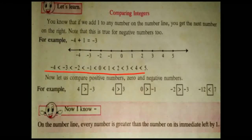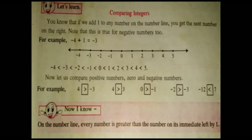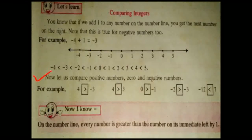Here all these numbers are given in ascending order. This is the smaller number sign and this is the bigger number sign. Now let us compare positive numbers, 0, and negative numbers. For example, 4 is greater than minus 3 — this is the greater sign — because positive numbers are always greater than negative numbers. You have to compare the first number to the second number, then put the sign accordingly.